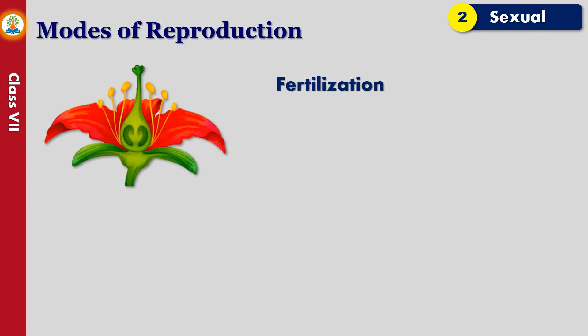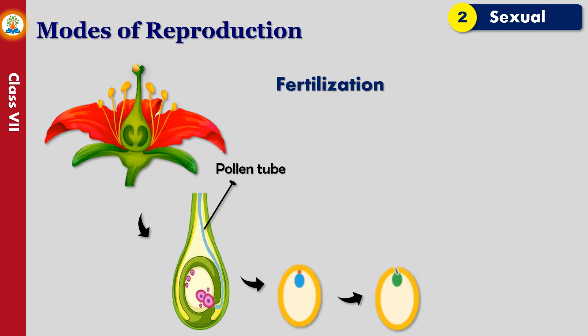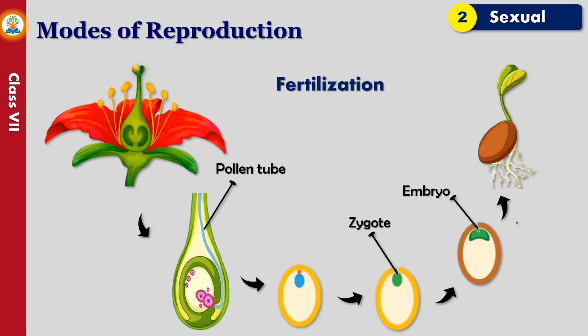Fertilization is the process of fusion of male and female gametes in the ovules. When the pollen grains get transferred to the stigma of the same or another flower of the same kind, a thin tube called the pollen tube is sent out from the pollen grains. This is known as pollen germination. The pollen tube carries the male gametes towards the female gamete present inside the ovule, traveling through the style and reaching the ovule in the ovary. The male gamete is released and fuses with the female gamete to form a zygote.